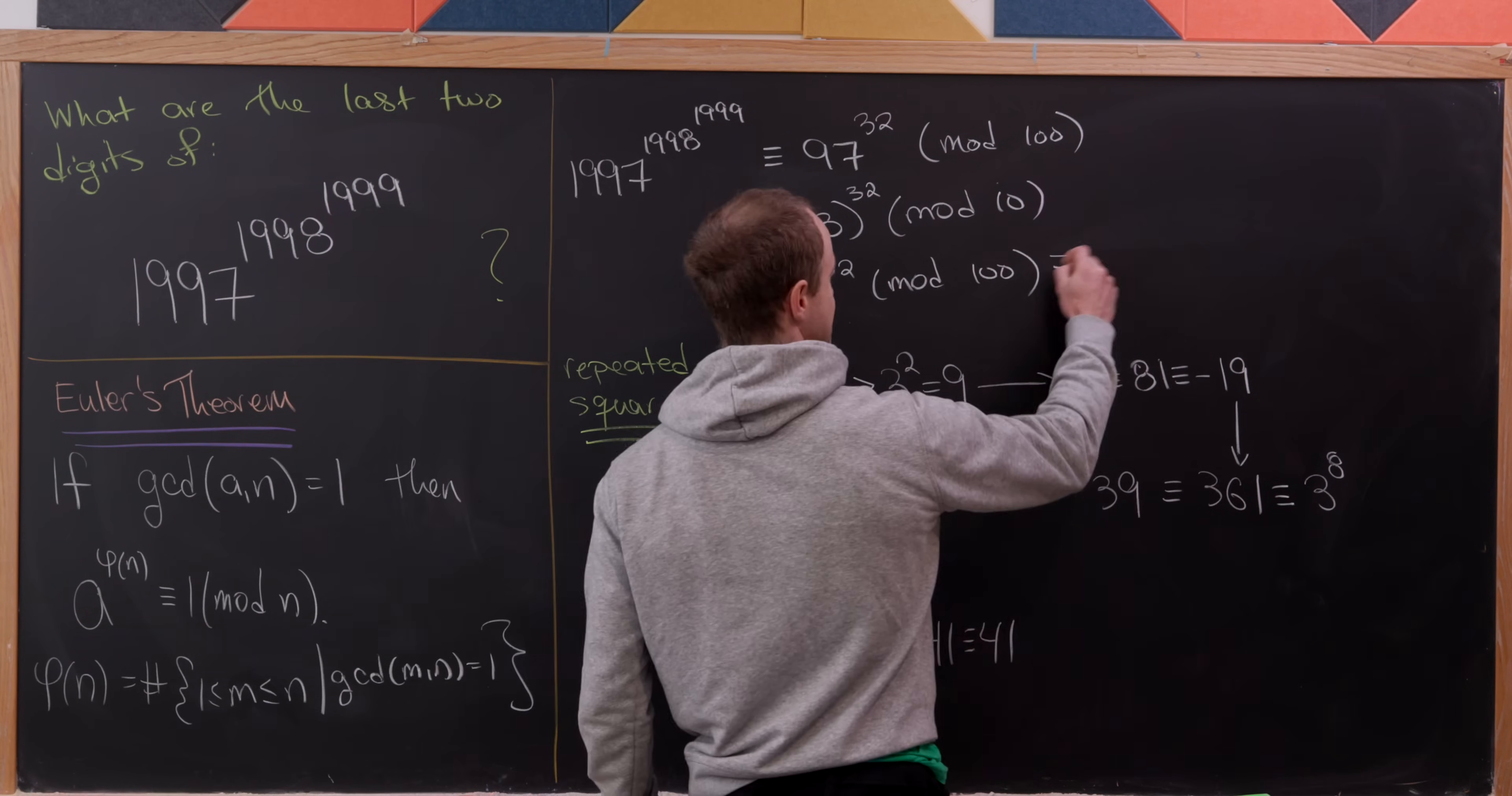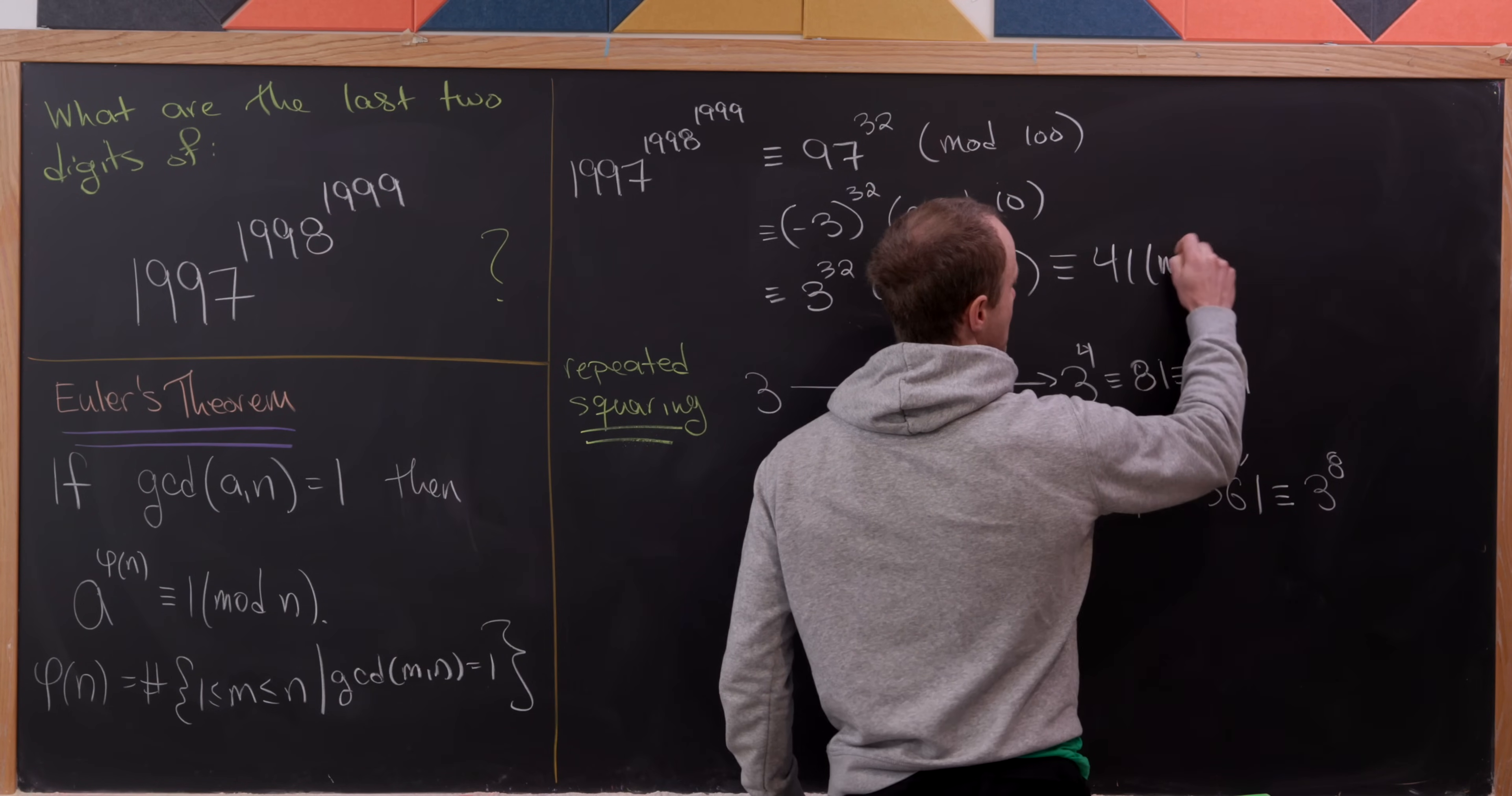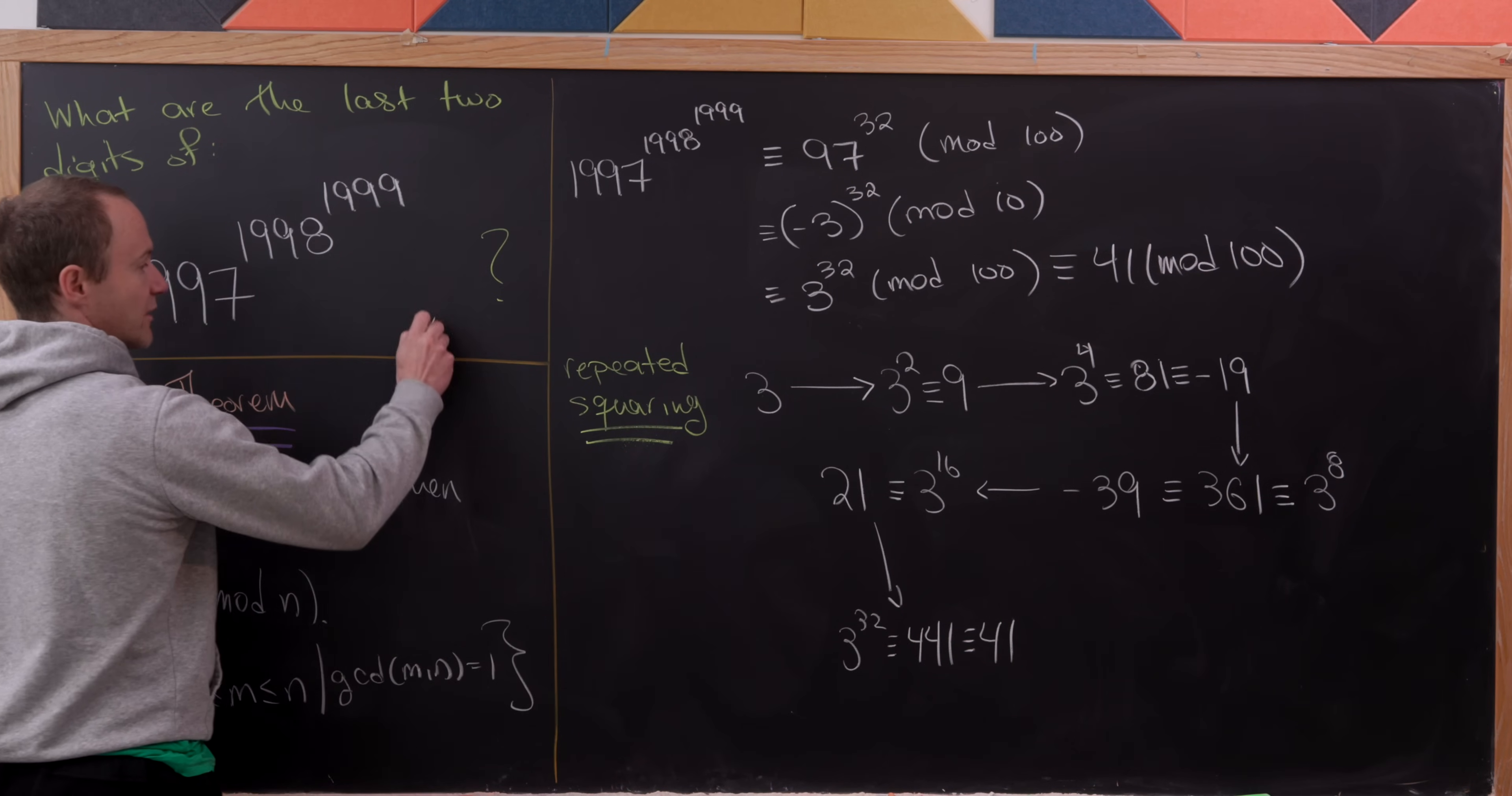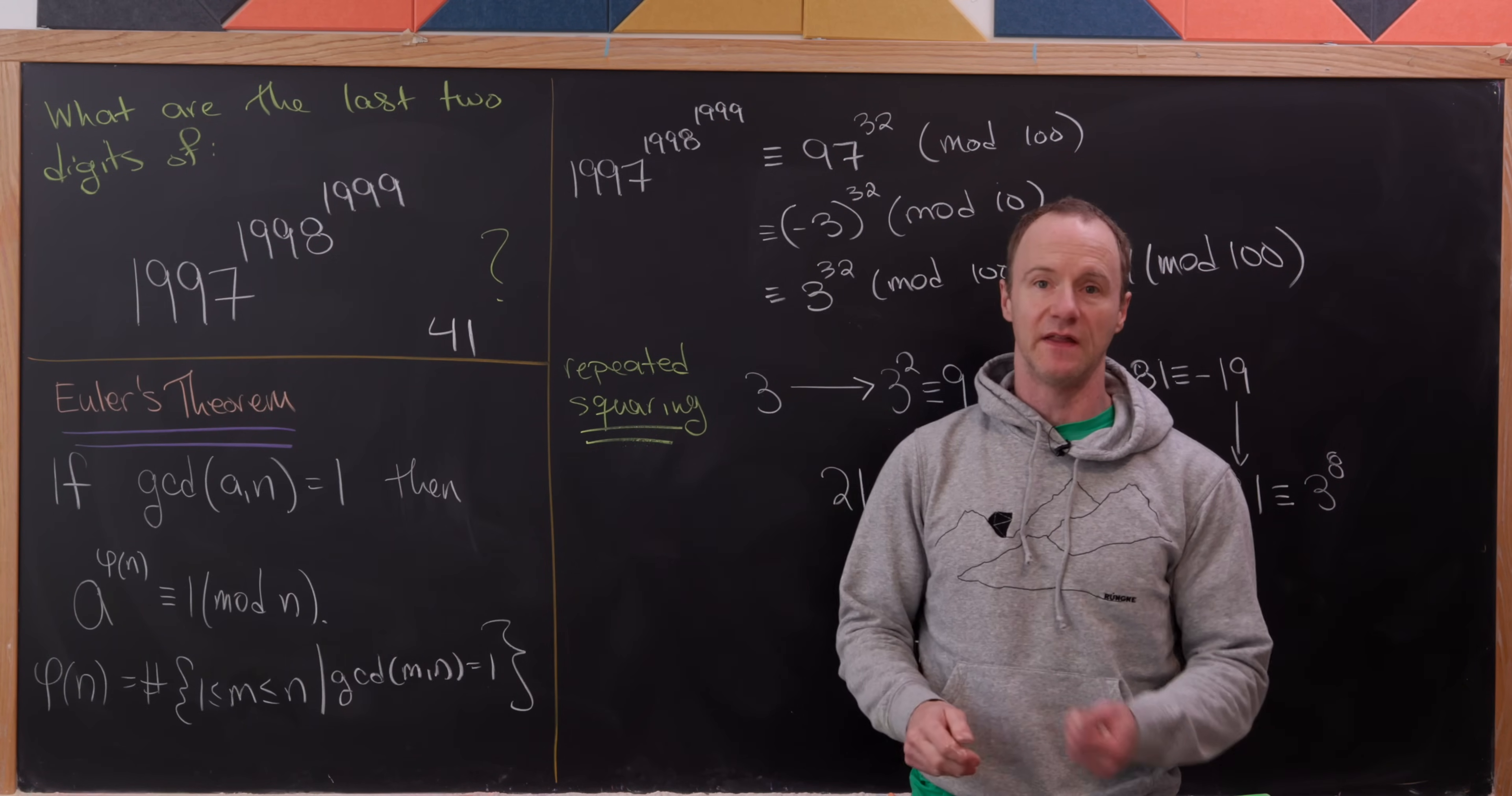In the end, we've seen that our original number is congruent to 41 mod 100, which answers the question. What are the last two digits? The last two digits are 41, and that's a good place to stop.